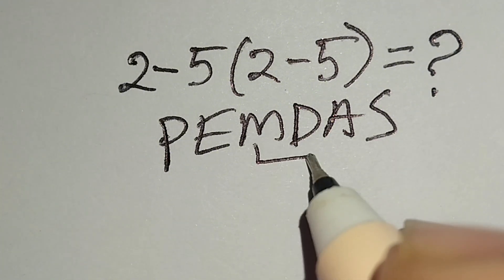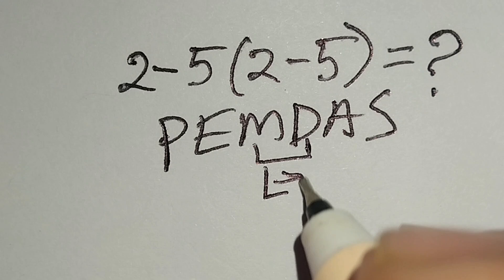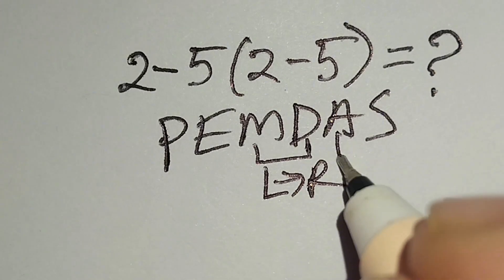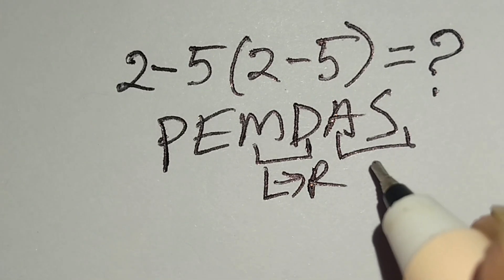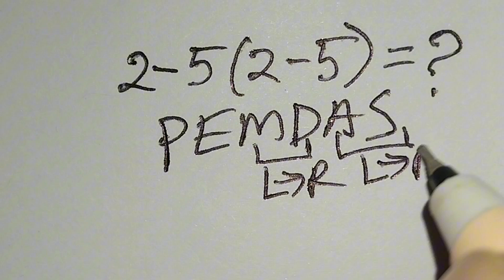Remember, multiplication and division have the same priority, so we work left to right. Addition and subtraction also have the same priority, so we work left to right for these as well.